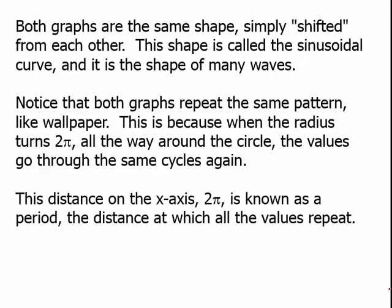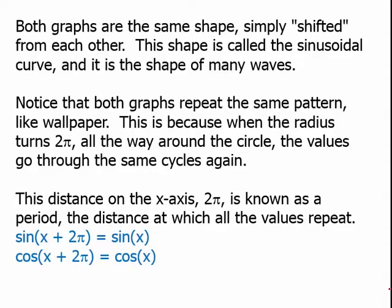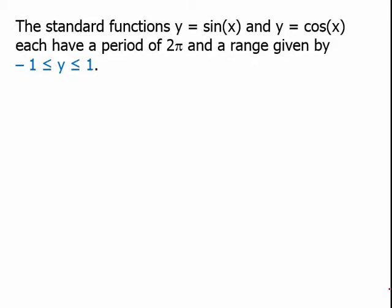The period — the distance on the x-axis at which all the values repeat — is 2 pi. So the sine of x equals the sine of x plus 2 pi for any value of x, and similarly for cosine x. The standard functions y equals sine x and y equals cosine x each have a period of 2 pi and a range given by negative 1 ≤ y ≤ 1.